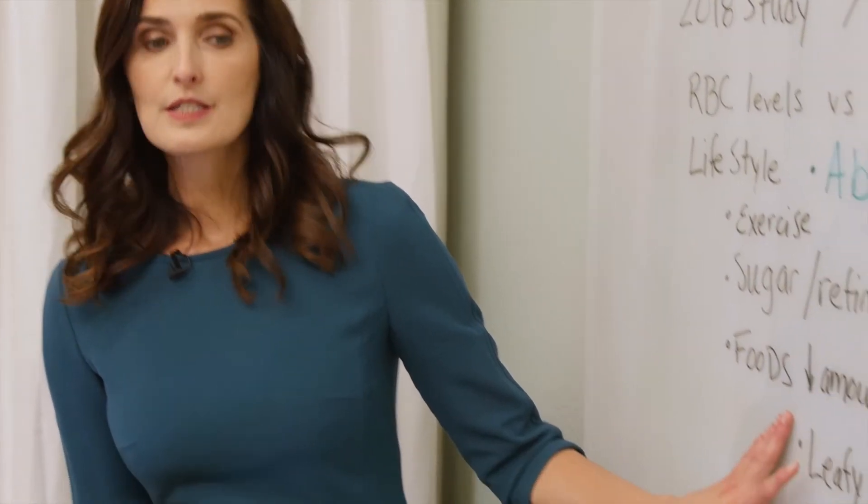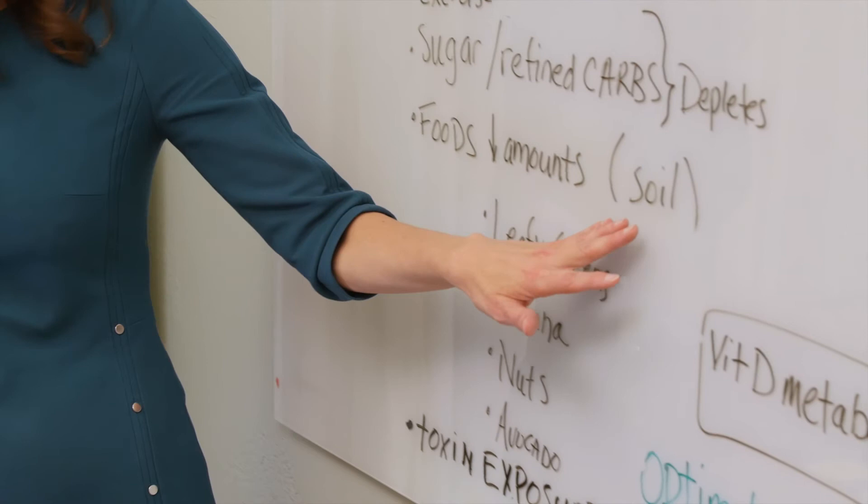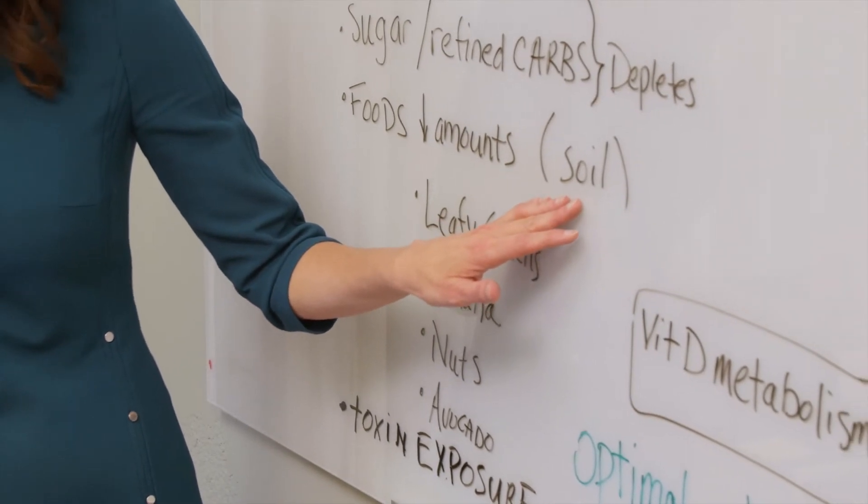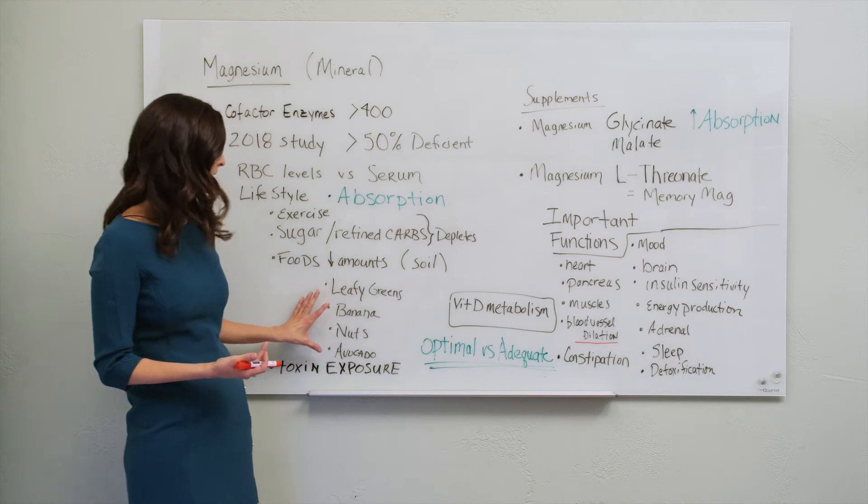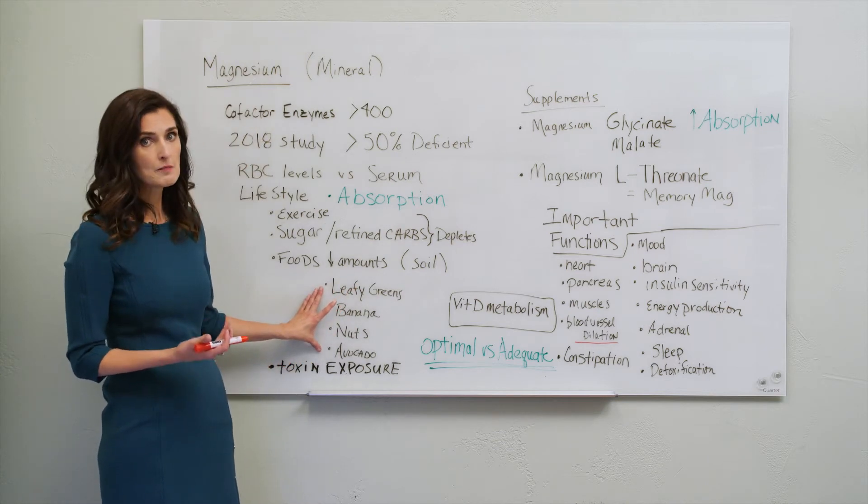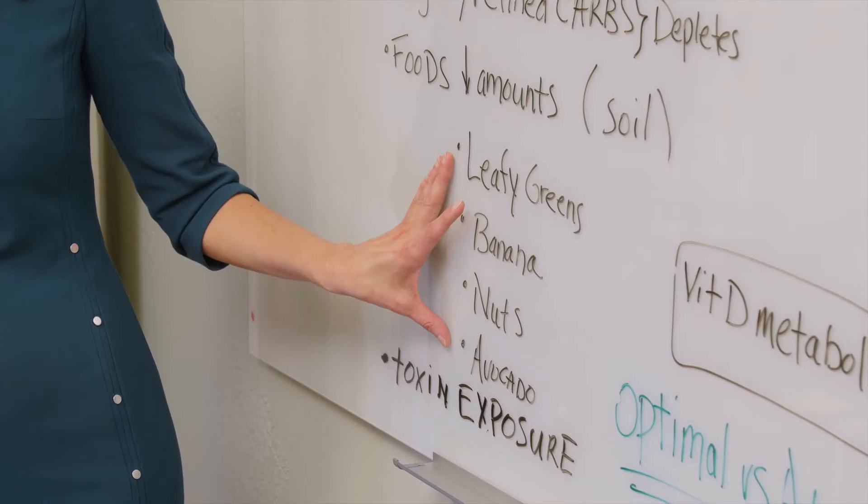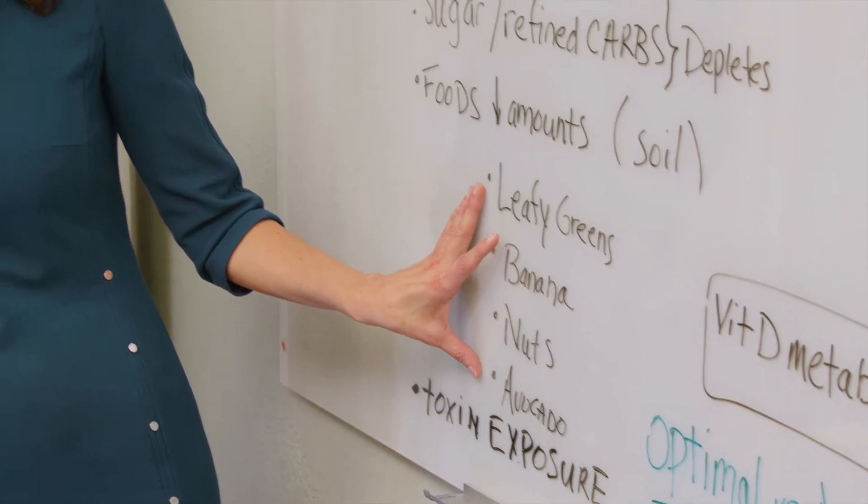The supply is decreased in our food. The soil really just doesn't have as much of the minerals including the magnesium as it needs to. So even though I really recommend eating the foods that are high in magnesium, a lot of times you're just not getting the amount that you need from that and then not absorbing it.